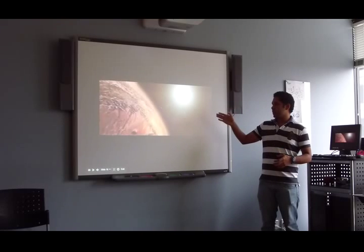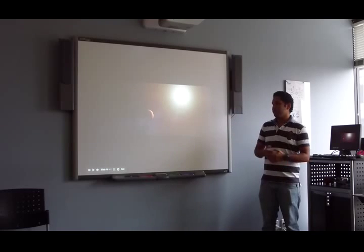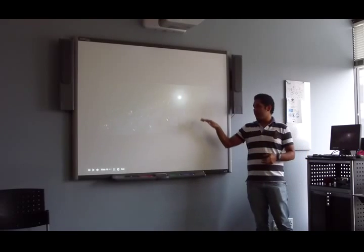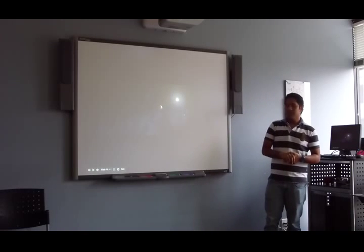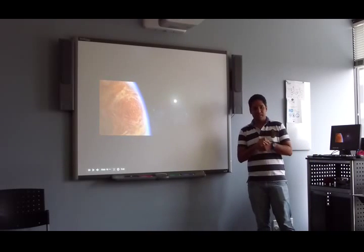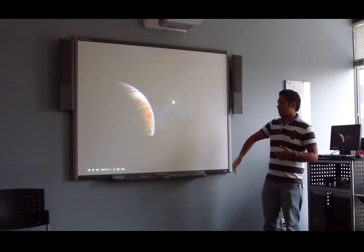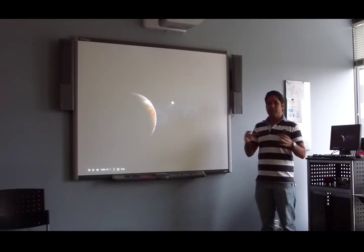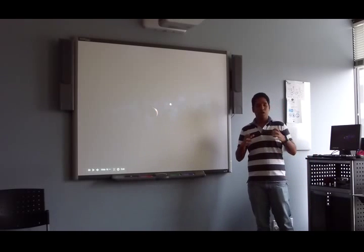This is the asteroid zone between Jupiter and Mars. As you see, the universe is really, really big. After the solar system we have the Milky Way. The Milky Way is our galaxy, and the Milky Way is one of the galaxies in the universe.